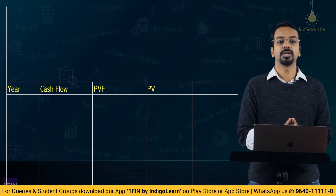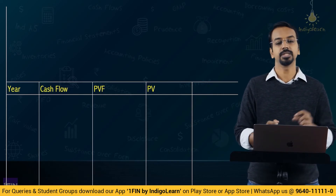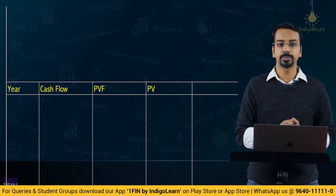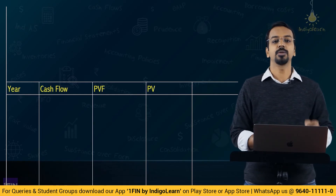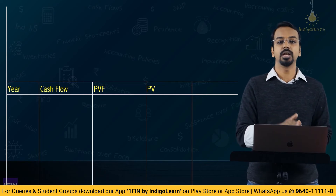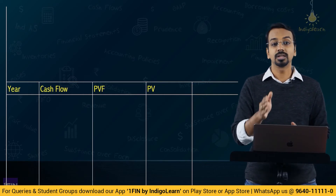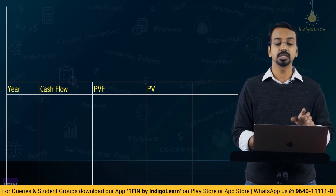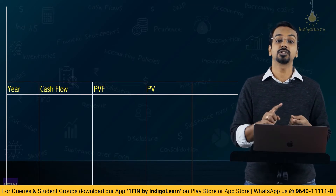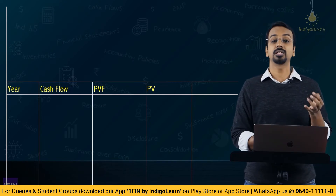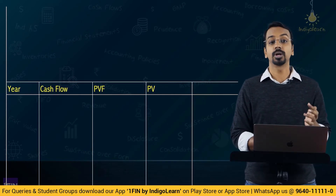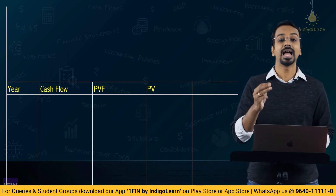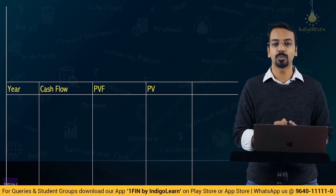All amounts are in lakhs. The property was purchased on 1st April Year 1, and we need the carrying amount as on 31st March Year 4. From 1st April Year 1 to 31st March Year 2 is 1 year, to Year 3 is 2 years, to Year 4 is 3 years. So we need to calculate depreciation for 3 years.